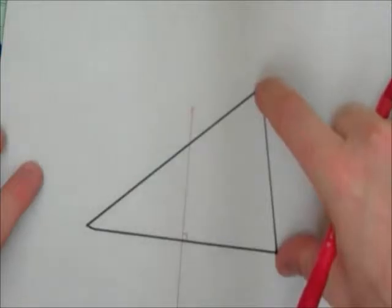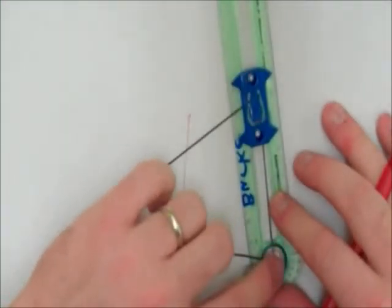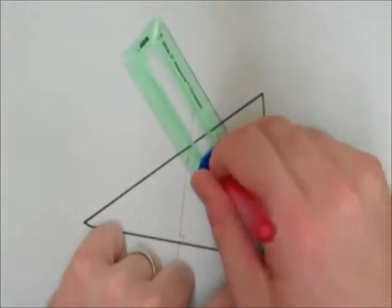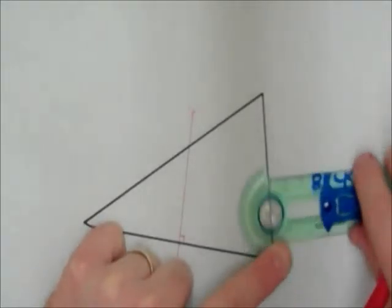So now I'm going to create the perpendicular bisector of this segment right over here. I'm going to follow the same process: point of the compass, open it up more than halfway, make a mark on this side, and one on this side.